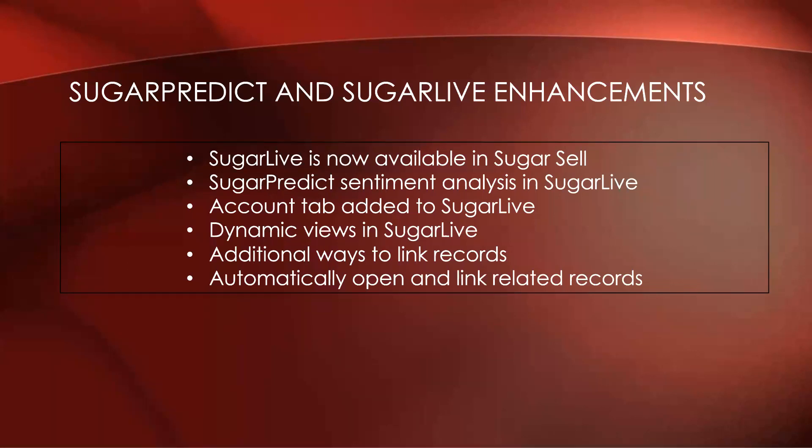The account tab has been added to Sugar Live, so users can now view account records in more detail. Dynamic views are now available — you can interact with Sugar Live and your Sugar records in full view, compact view, or minimized to easily toggle between the three. Sugar Live now has additional ways to link records, including accounts, bugs, and purchase line item records in both record views and record view dashlets. When a Sugar Live session begins, related records are automatically populated in the correct area tab and linked to the call record being created. We're actually working to implement Sugar Live right now, and that's one of the things we hope to demo in September.